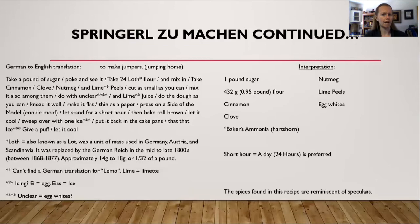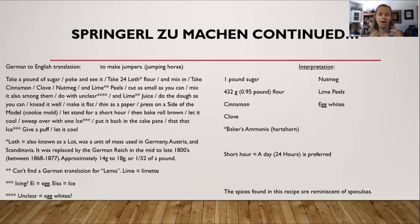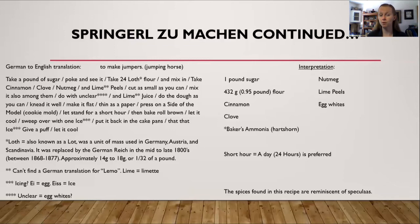Another word I had trouble translating — the closest I can come to is 'unclear,' but in baking I don't know what that would be. The closest thing I could think of is egg whites, because modern recipes for this cookie call for eggs. The recipe I bake calls for five eggs. Looking at the 1688 recipe it calls for a pound of sugar, almost a pound of flour, cinnamon, clove, nutmeg, lime peels, and then it says 'do with unclear.' Interestingly, this recipe calls for cinnamon, clove, and nutmeg — spices you don't normally find in springerle cookies; they're reminiscent of the speculoos recipe.